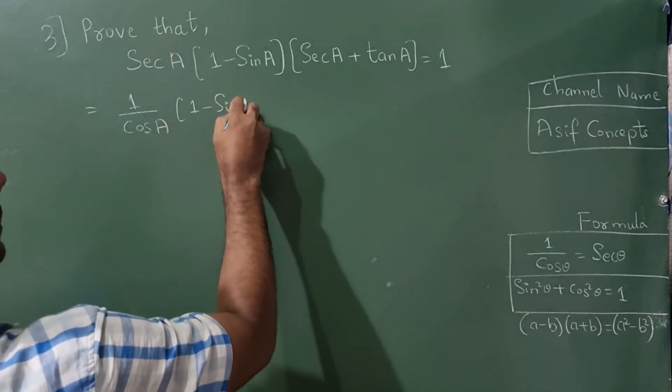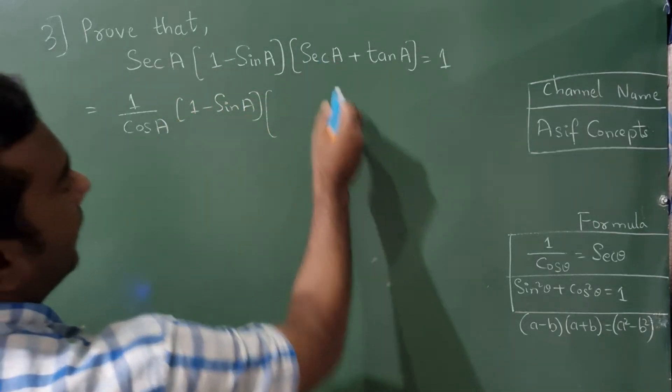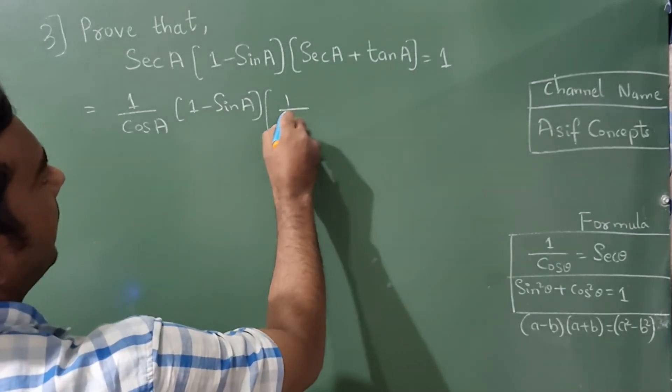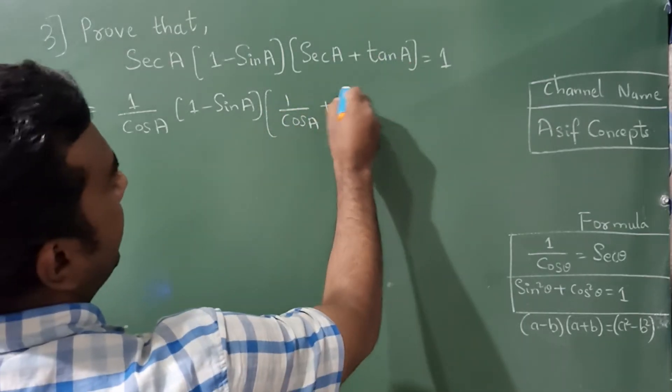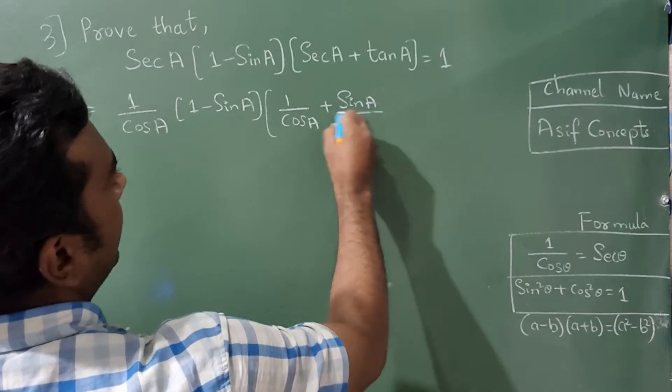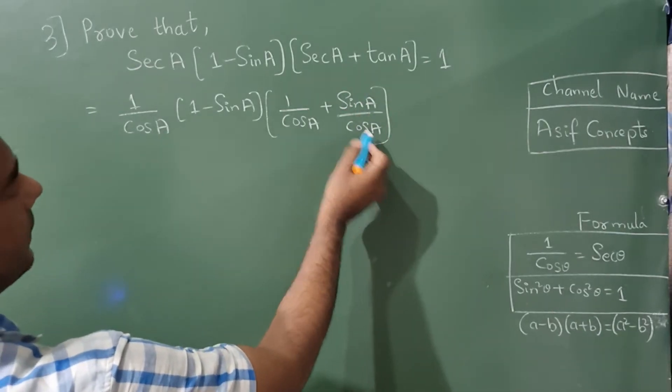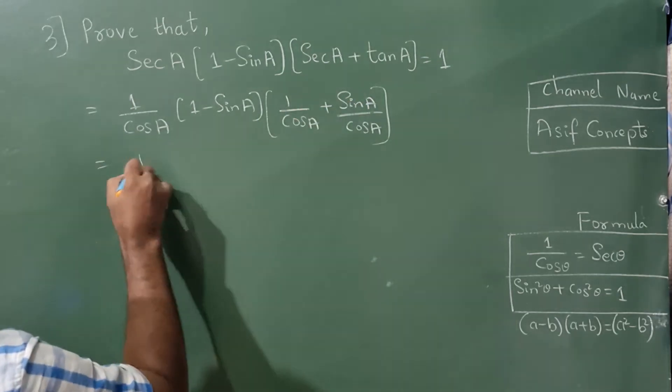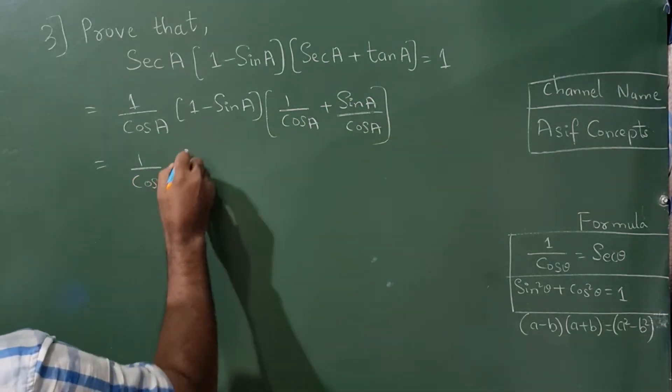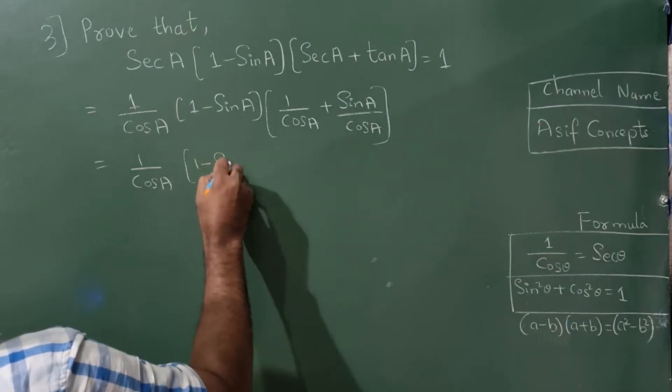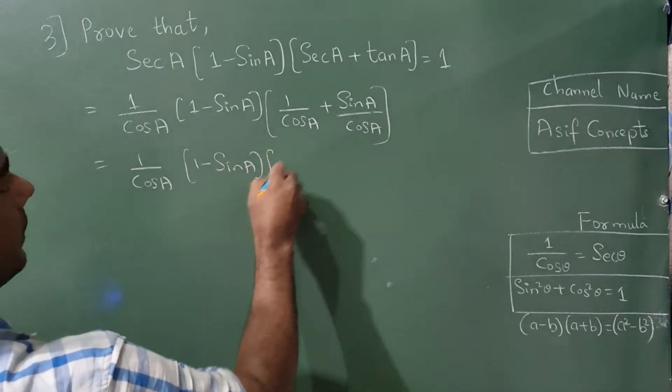1 minus sin A. Now again, this is 1 by cos A. Tan A is sin A upon cos A. Okay, when denominators are the same, then add the numerators: 1 upon cos A, 1 minus sin A, so this...